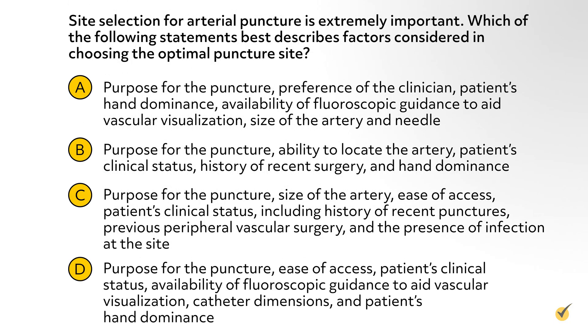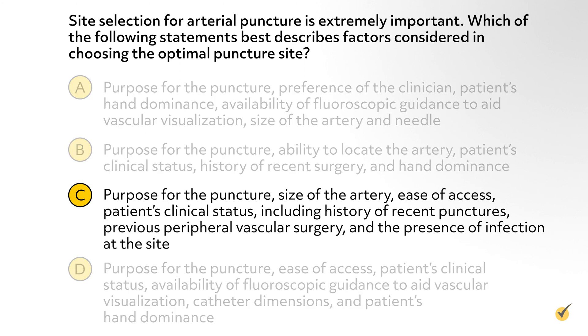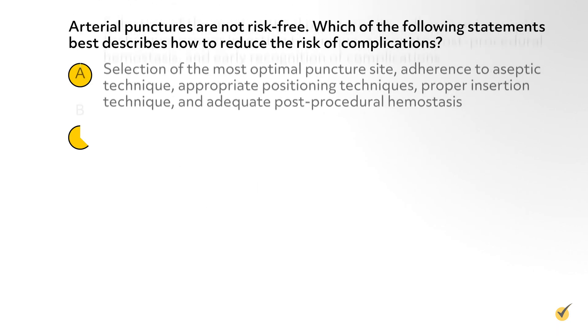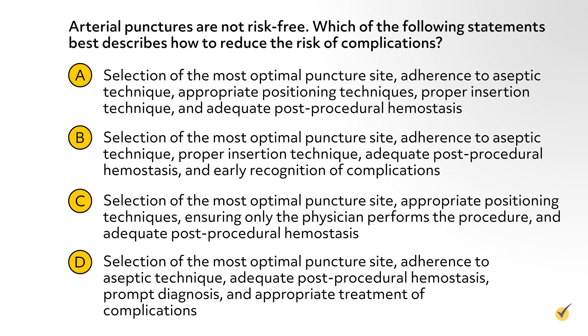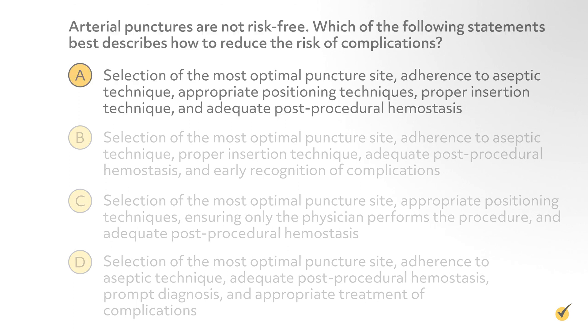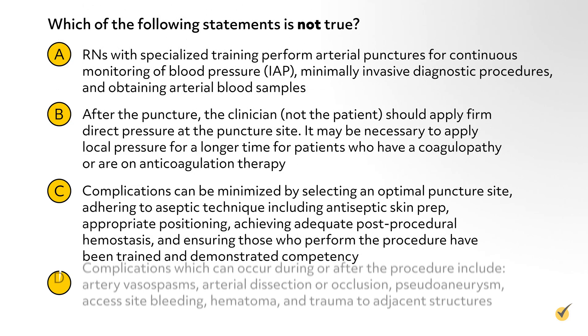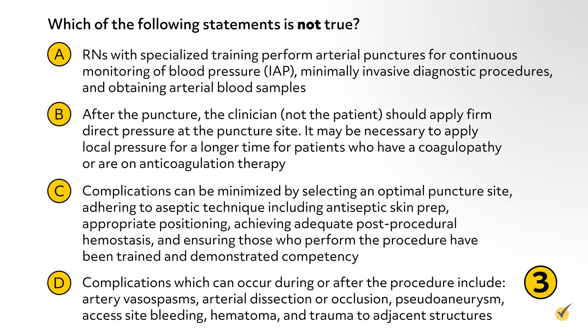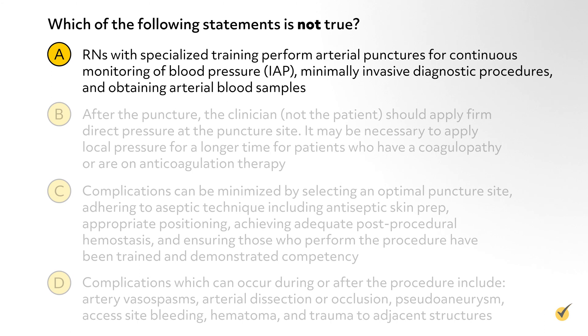Now that we've gone over the process, let's look at a few review questions. Question 1: Site selection for arterial puncture is extremely important. Which of the following statements best describes factors considered in choosing the optimal puncture site? If you chose C, you are correct. Question 2: Arterial punctures are not risk-free. Which of the following statements best describes how to reduce the risk of complications? If you chose A, you are correct. Question 3: Which of the following statements is not true? If you chose A, you are correct.